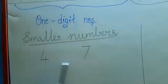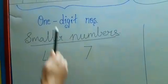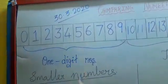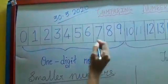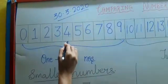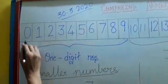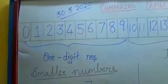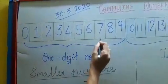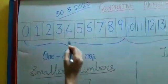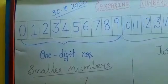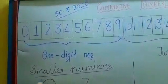Which is the smaller number? See the numbers on the number line. Where is 4? Here is 4. Where is 7? Here is 7. So, 4 is the smaller number. The number that is closer to 0 is called the smaller number. 4 is closer to 0, so 4 is the smaller number. We will circle number 4.